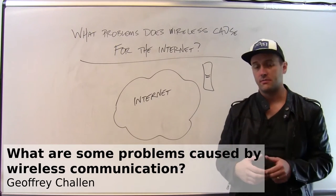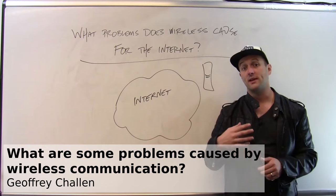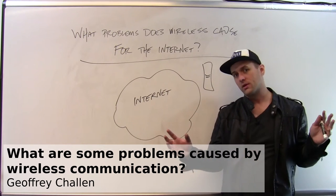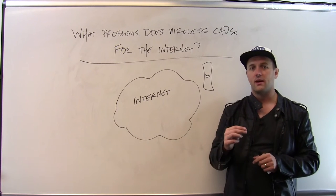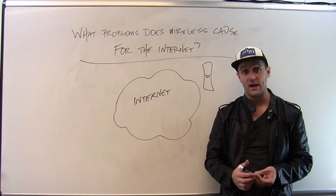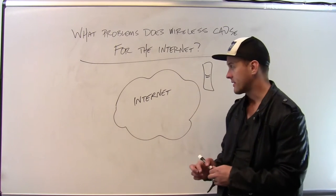Wireless communication poses some fundamental challenges to the way that the Internet was designed. The core Internet and some of the basic Internet protocols weren't necessarily designed considering some of the impact that wireless links would have. So let me show you sort of the canonical example.